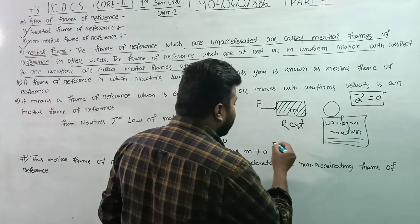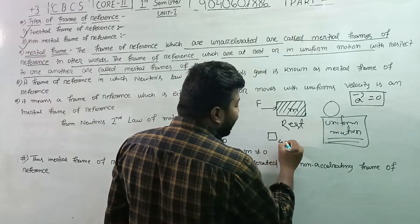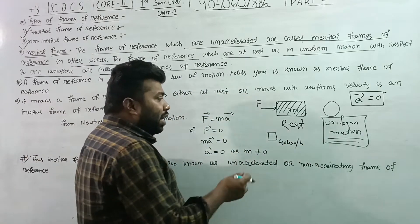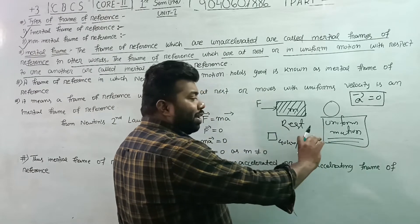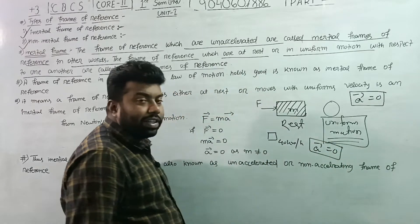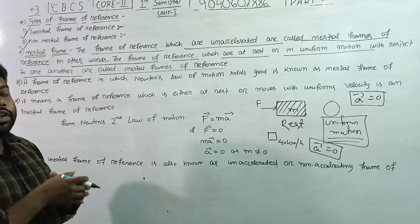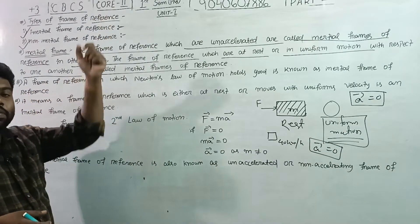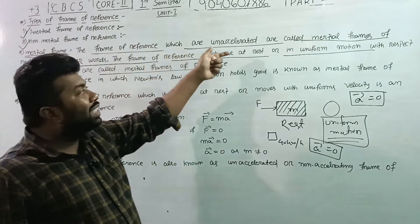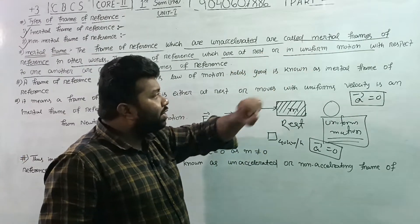Uniform motion means, for example, you have a train moving at 40 km per hour speed — that is uniform velocity, meaning acceleration is zero. The frame of reference which is unaccelerated, with acceleration equal to zero, is called the inertial frame of reference.